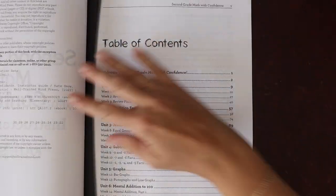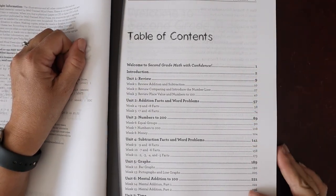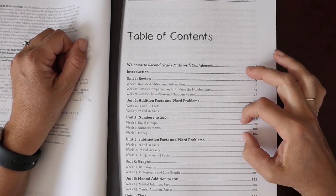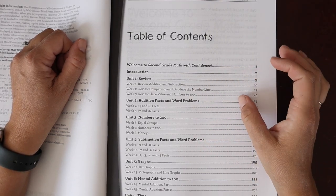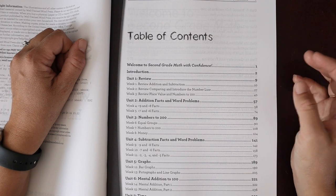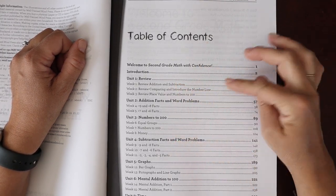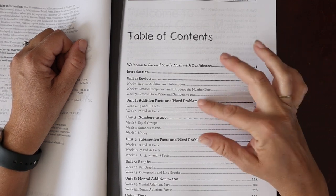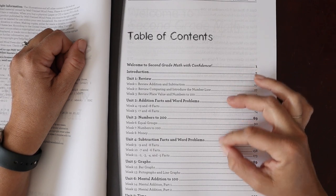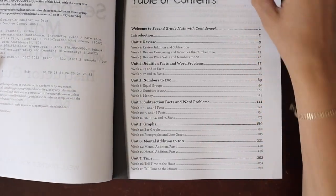We have the table of contents at the beginning. The way that Math with Confidence is organized, and this is true across their grade levels, we have different units, and then within the units the units are broken into weeks, and the weeks are then broken into five days where the fifth day is an enrichment type activity and a read aloud related to the content with math. So the different units for second grade are: you're reviewing addition and subtraction and place value and then really solidifying your math facts, numbers to 200, solidifying your subtraction facts, graphs, mental math. I really like that the mental math is in here.